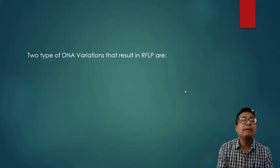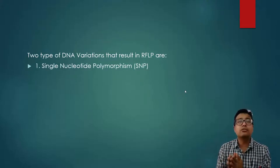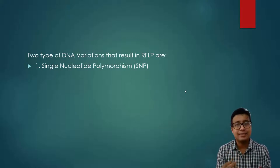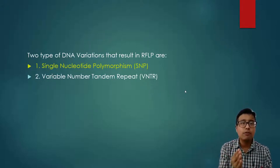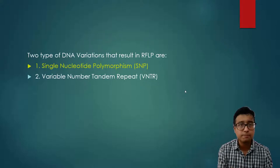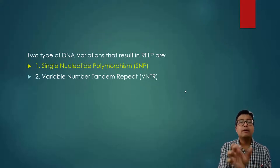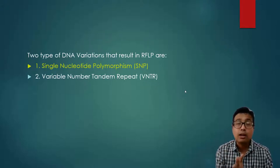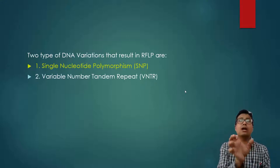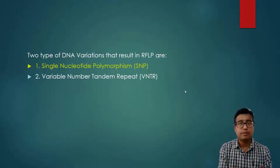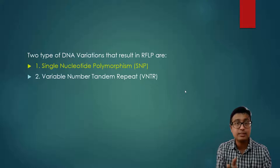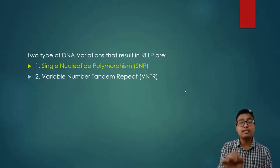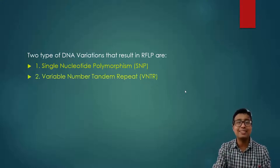There are two types of RFLP that you need to mention in an exam short note or viva: number one, SNP (Single Nucleotide Polymorphism), and number two, VNTR (Variable Number Tandem Repeat). PG students need to know detail about both, but UG students just need to know these are the varieties of RFLP.